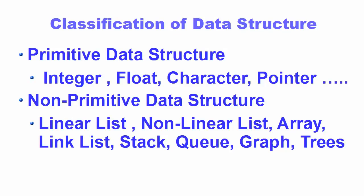Data structures are normally divided into two broad categories. The first category is called primitive data structures and the second is called non-primitive data structures. Primitive data structures are basic structures like integers, floats, characters, or pointers, which are directly operated upon by machine instructions. Examples include integer and floating point numbers, character constants, string constants, and pointers.